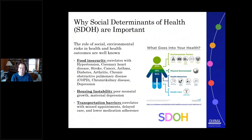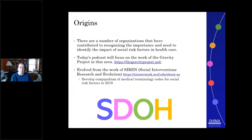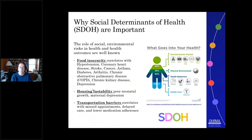There is growing evidence that food insecurity, for example, correlates with a number of conditions like hypertension, diabetes, or heart failure, and housing instability can result in poor neonatal growth and maternal depression. Transportation barriers also correlate with missed appointments, delayed care, and lower medication adherence.